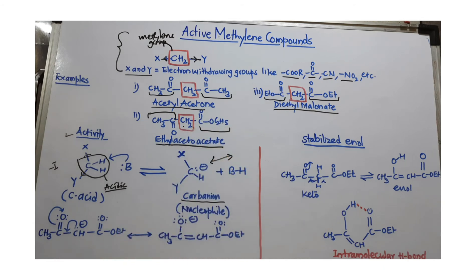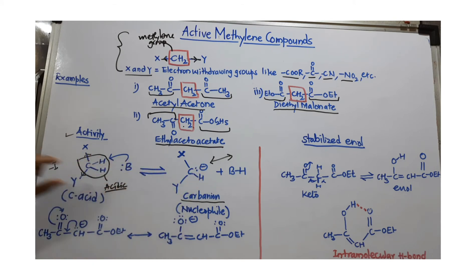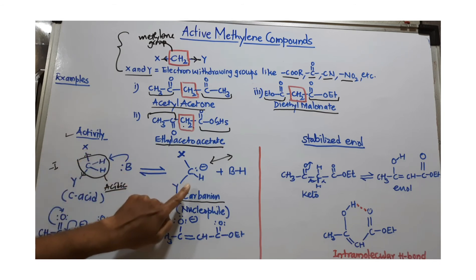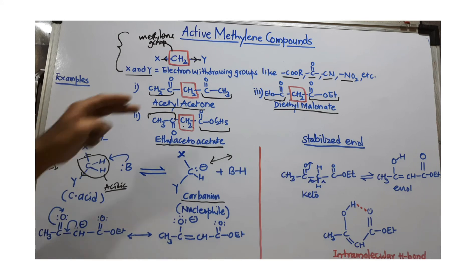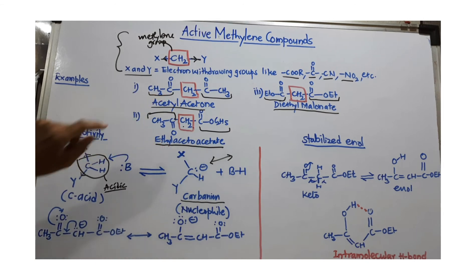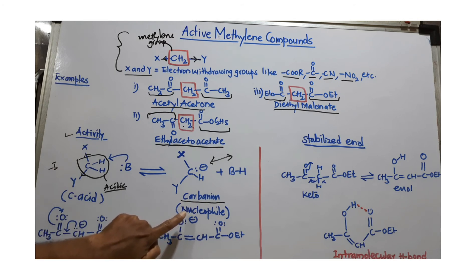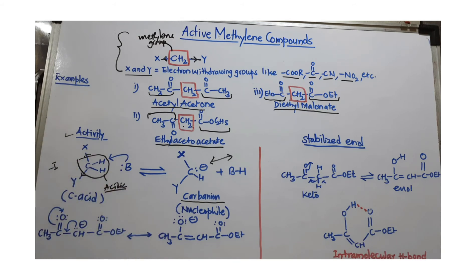Because of two factors — the minus-I effect as well as resonance — this reaction is possible. These two protons are highly active and can easily be removed using a base, converting the compound into a carbanion. Because of this, these compounds are called active methylene compounds. All three example compounds are active methylene compounds because we can easily produce a carbanion from them using a base. This carbanion is also called a nucleophile.